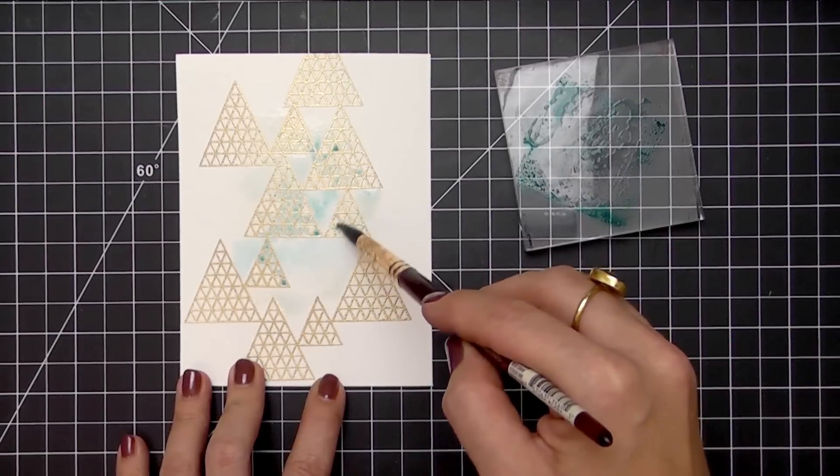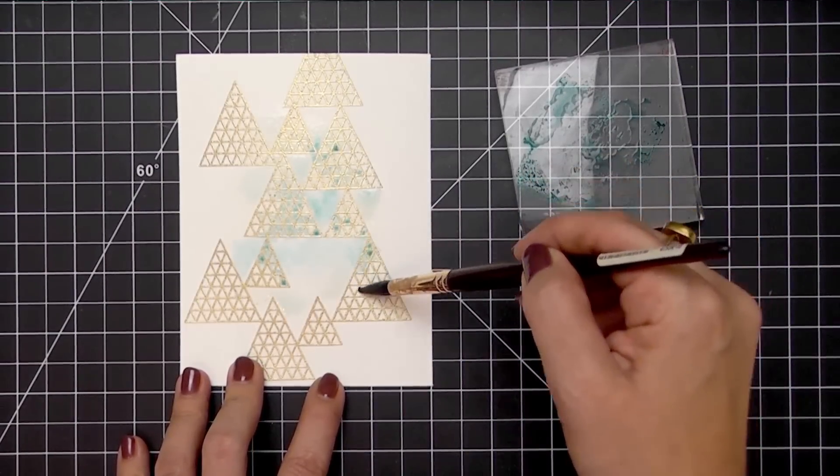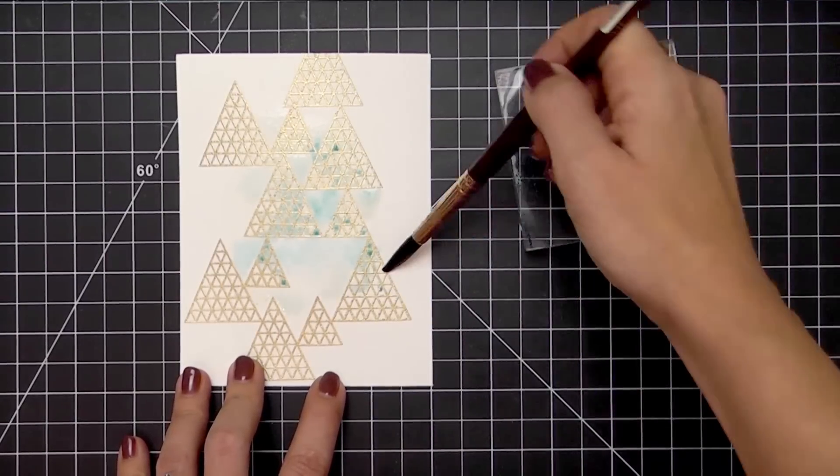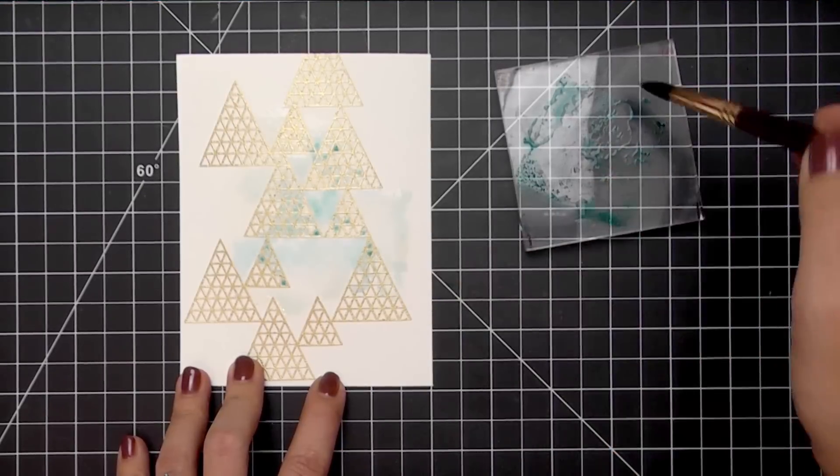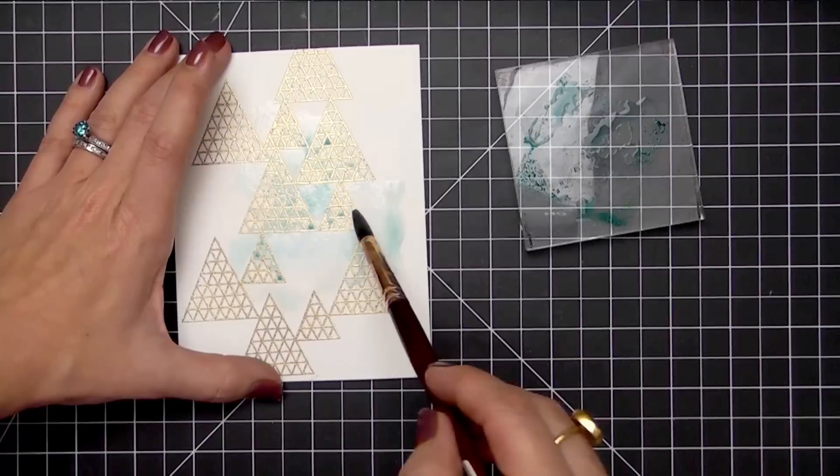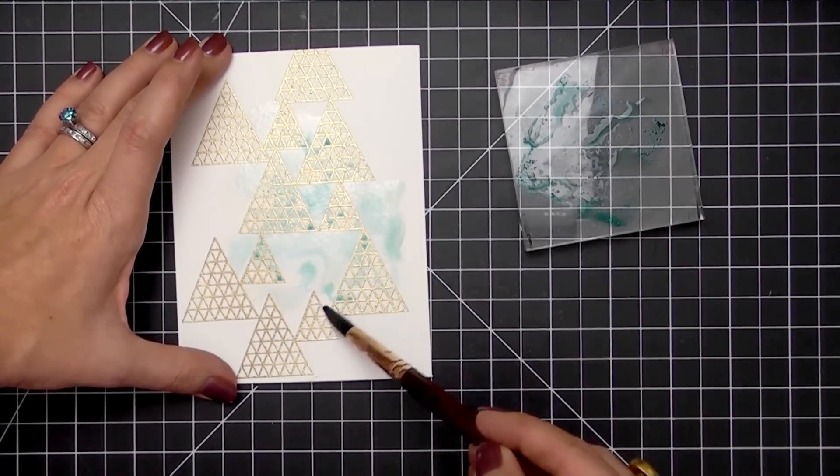In other areas, I want it to bleed out into clear water. So really again here there's no rhyme or reason. I'm kind of laying down some color, watching what it does. If it's too even in an area for me, then I'll add some more water to spread it out or more color.